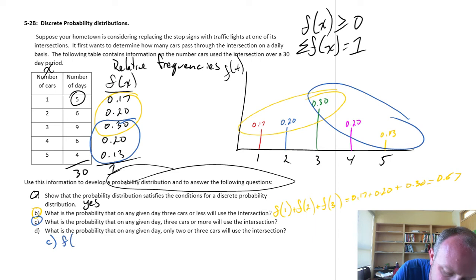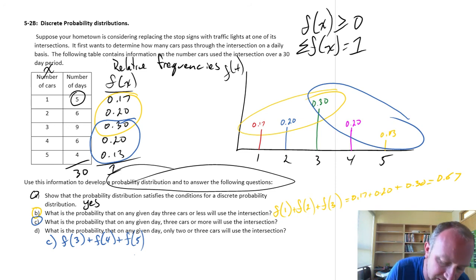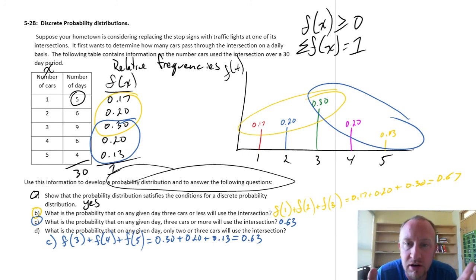So, this is the frequency that we see. Three cars, plus four cars, plus five cars. And we don't see six or seven or eight, so we just have to add up to just the fifth. And so, here we're going to add up together 0.3 plus 0.2 plus 0.13. And here, this is 0.63. So, there's a 63% chance on any given day, we see three cars or more.